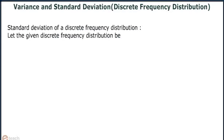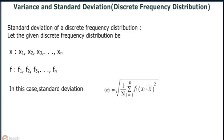Standard deviation of a discrete frequency distribution. Let the given discrete frequency distribution be x equals x1, x2, x3 till xn and f equals f1, f2, f3 till fn. In this case, standard deviation sigma equals under root of 1 by n, summation i equals 1 to n of fi times (xi minus x-bar) whole square, where n equals summation i equals 1 to n of fi.